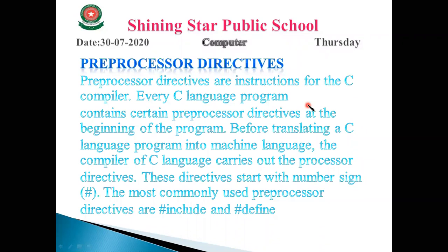Today we are discussing preprocessor directives. In our previous lectures, when we write any functions within a main body, we have to write the header file of that function at the beginning of the program. Today we learn that header files are written in preprocessor directives, and these preprocessor directives start with the number sign, hash.